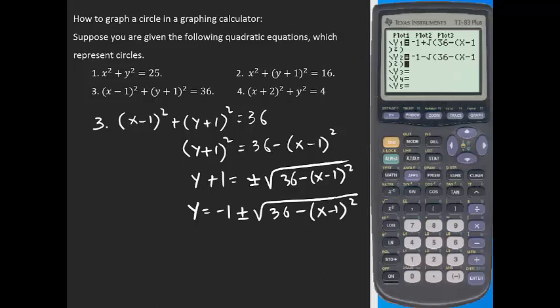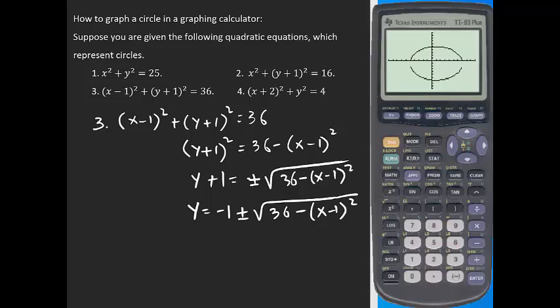So y equals negative 1 plus or minus the square root of the expression. For y1, take the positive: open parenthesis, 36 minus (x minus 1) squared, then close parenthesis. For y2, take the negative sign. This gives the upper and lower portions of the circle. Note that the calculator may not plot all the points, but in other calculators you may see the complete circular path.